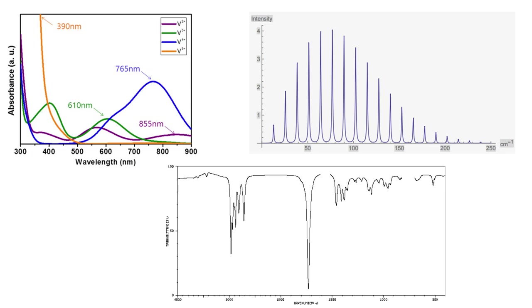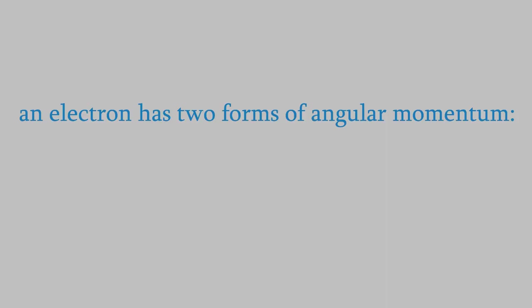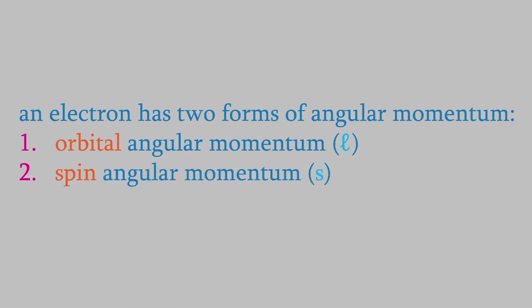So here's an important thing to remember. Electrons have different types of angular momentum. There's orbital angular momentum, which we give the symbol of a script letter L, and there's spin angular momentum, which has the symbol S.